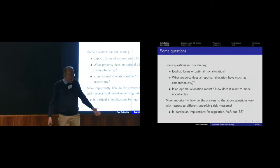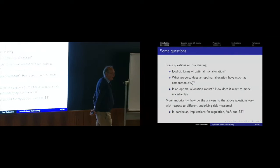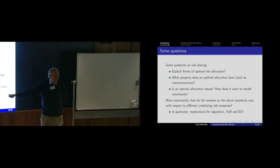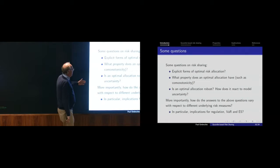You all know Nassim Taleb. His most recent book, Skin in the Game, is exactly about co-monotonicity. I think in the crisis, if more bankers had really had skin in the game, things might have been a bit different. The major new contribution in this talk is robustness — not robustness of risk measures, but robustness of risk allocations, which I think is novel in this paper.